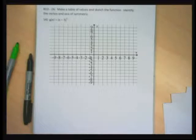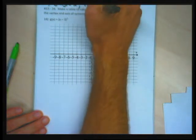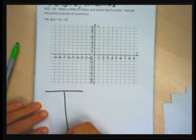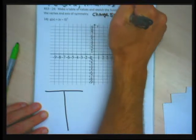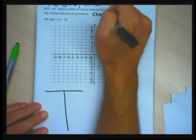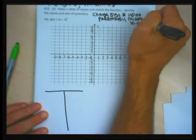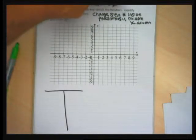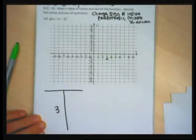Problems 13 through 24 have a single x inside parentheses. For these I can't use the −2, −1, 0, 1, 2 table. Instead I change the sign of the number inside the parentheses and put that in the middle of my x column. For problem 14, I see (x − 3) squared — I change −3 to positive 3, then go left and right two steps, giving the table 1, 2, 3, 4, 5.